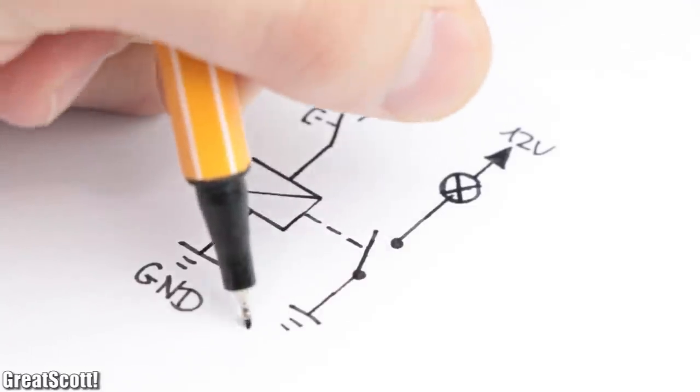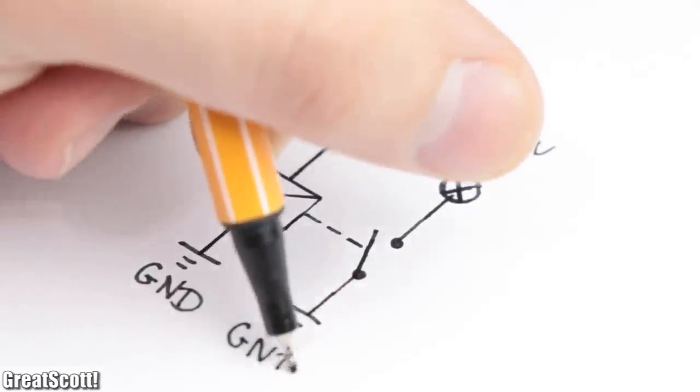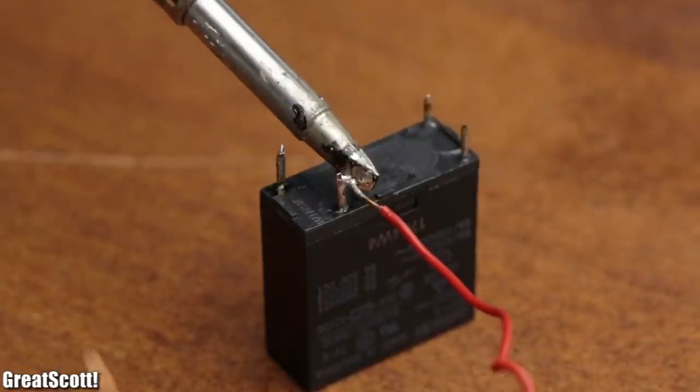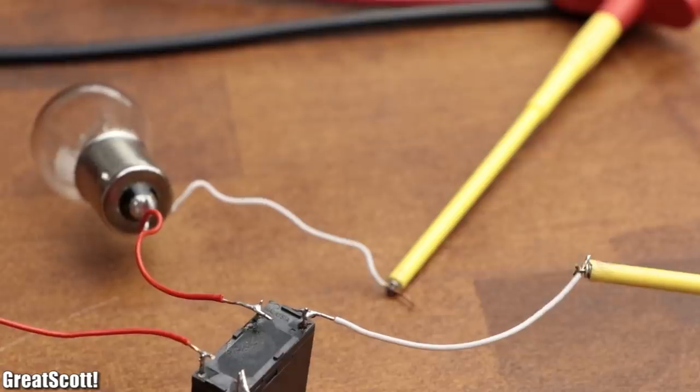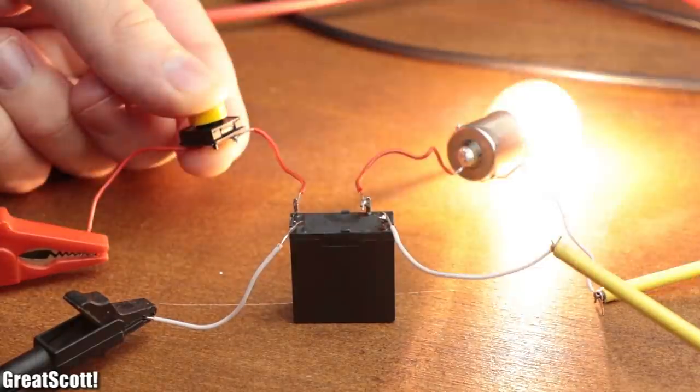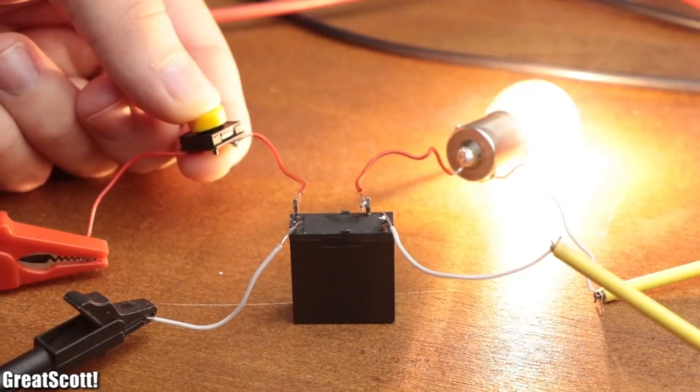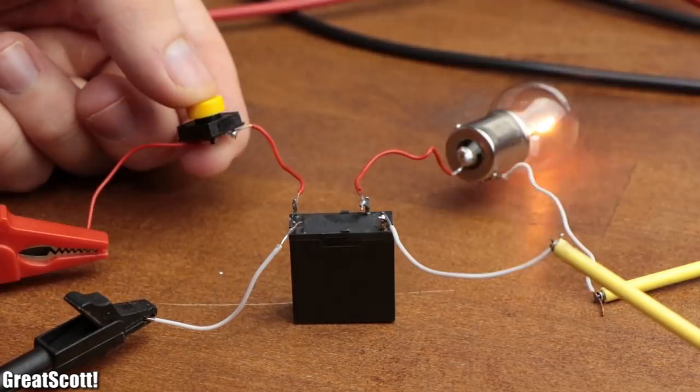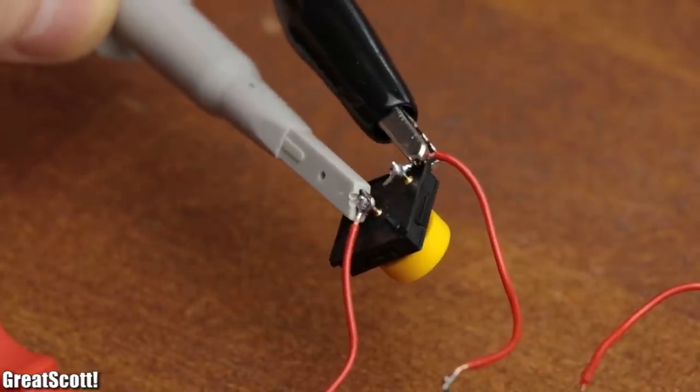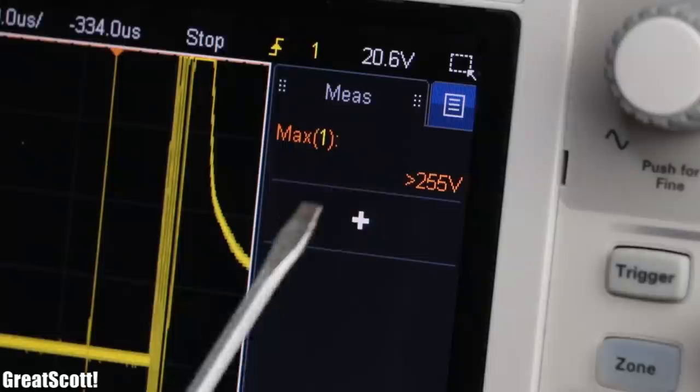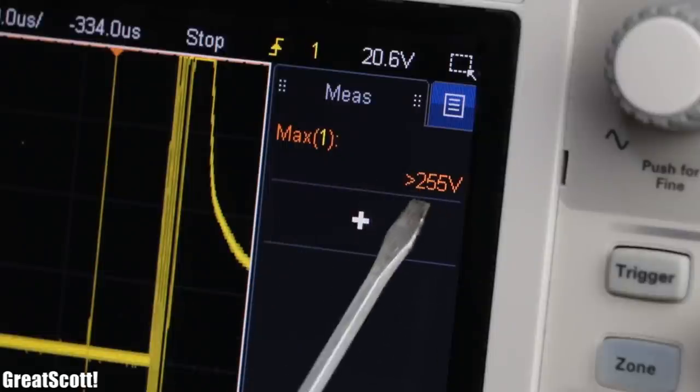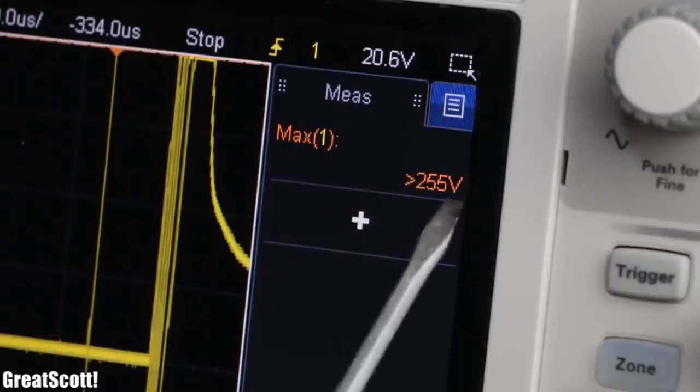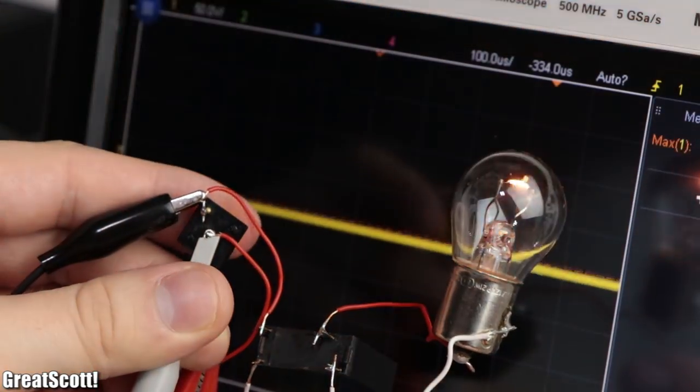At this point, you should be able to create a simple relay circuit that, for example, turns on or off a small light bulb. And while it may look like everything works flawlessly, there is a big problem. If we measure the voltage across the push button that I use to power the coil, we can see that there are voltage spikes of above 200 volts every time the coil de-energizes.